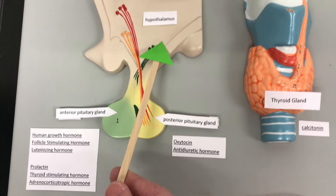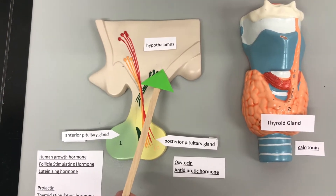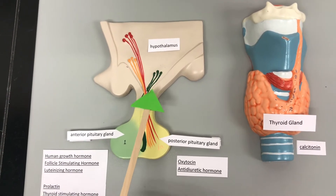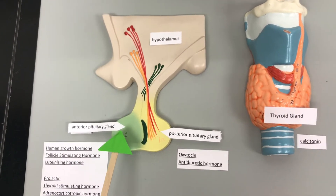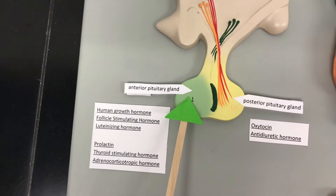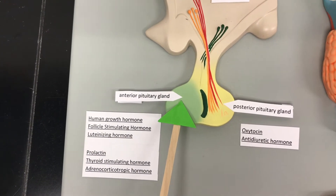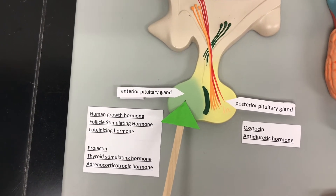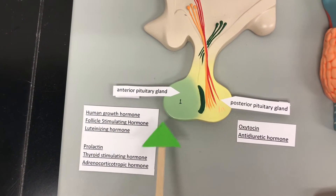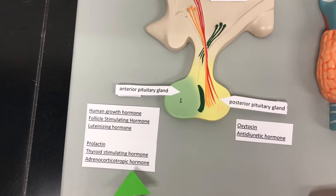The hypothalamus secretes hormones that are going to direct the anterior pituitary gland to either produce or not produce these six hormones.